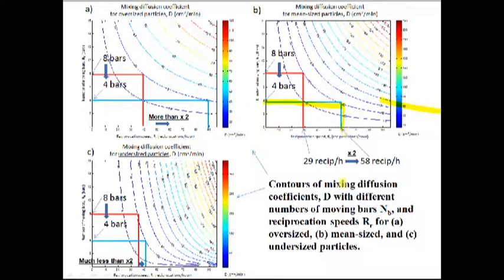Let me explain. For example, if we decrease moving bar, 8 bars to 4 bars, we have to speed up the reciprocation speed, 29 to 55 reciprocation, almost two times. But for oversized particles, it's more than two, and undersized particle, it's less than two.